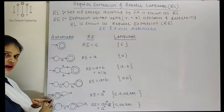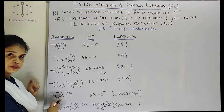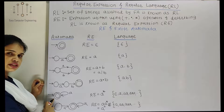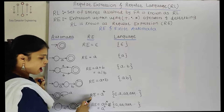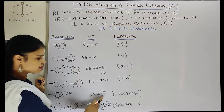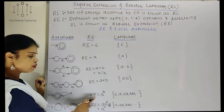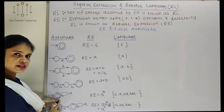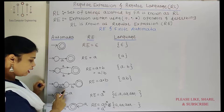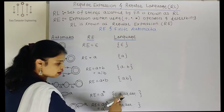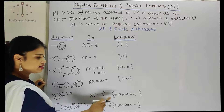Next, the initial state is also the final state and there is a self-loop on 'a'. That means we can accept any number of 'a's, including epsilon, because this is both the initial and final state. The regular expression is 'a star'. Using this, the language accepts epsilon, 'a', 'aa', 'aaa', and so on — any number of 'a's.